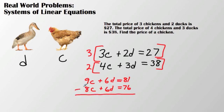Then when I go ahead and subtract my equations, I get c, and these cancel out, equals 81 minus 76, which is 5. So a chicken costs $5.